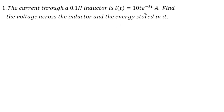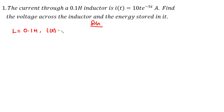Question one: the current through a 0.1 henry inductor is i(t) = 10·t·e^(−5t) amperes. Find the voltage across the inductor and the energy stored in it. So we want to find the voltage across the inductor as well as the energy stored. We have the inductance L = 0.1 henries and the current i(t) = 10·t·e^(−5t) amperes.